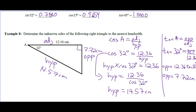If you plug in 12.36 squared plus 7.72 squared and take the square root, you won't get exactly 14.57, but you'll get something pretty close — because checking with rounded values gets you close but not exact. If we can avoid using a rounded intermediate value, we should. If you must use a calculated value, use the full number stored in your calculator — don't use a rounded value.